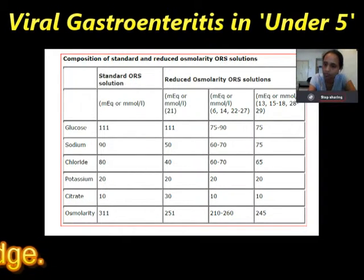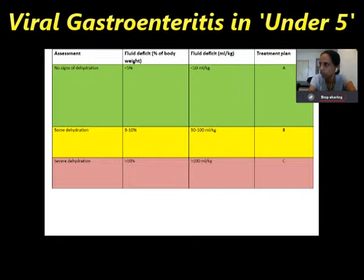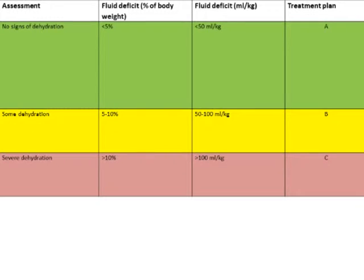Regarding ORS dosage from commercial sachets: dissolve the sachet in a cup of water. For young children, use a spoon and clean cup — a cupful of ORS. For infants, use a dropper or needleless syringe with small amounts. Children under 2 years can be offered a teaspoon every 1 to 2 minutes. Older children can take frequent sips directly from the cup.